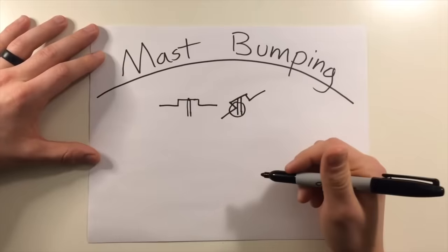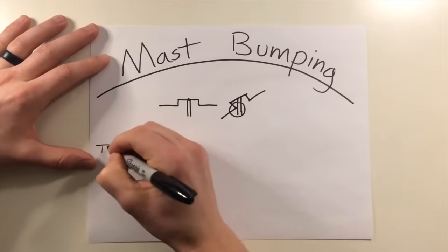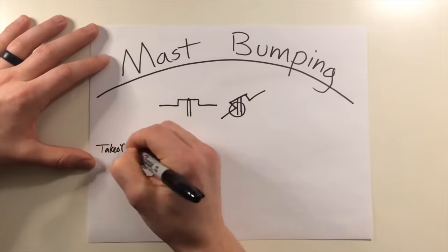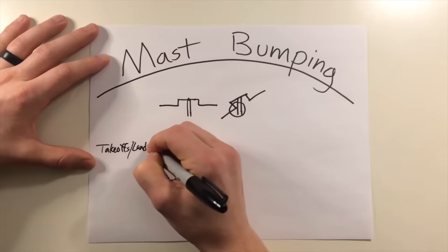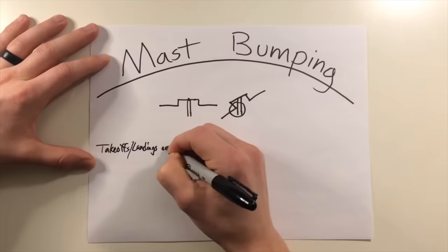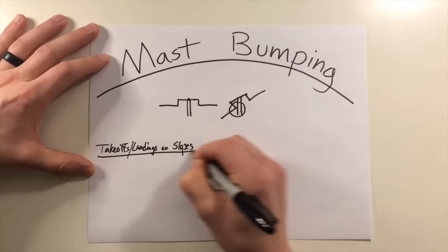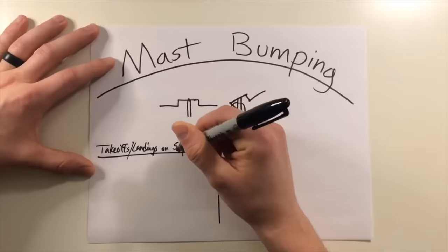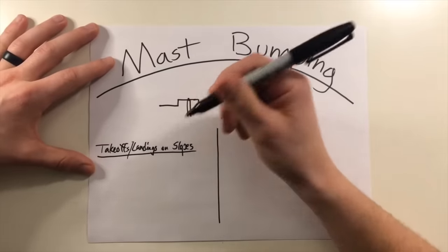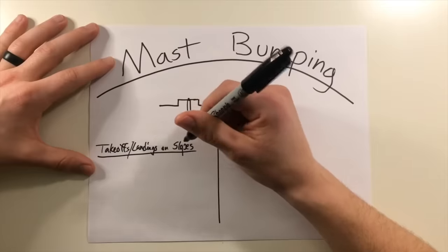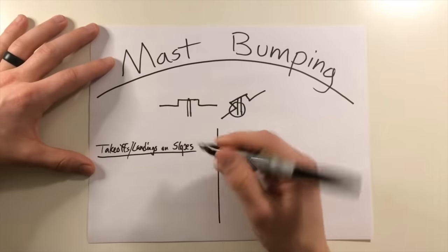The first reason that you could potentially get into mast bumping is during takeoffs and landings on slopes. If a helicopter attempts to take off or land to or from a slope there can be points where the cyclic limits may be reached. So what does that look like?